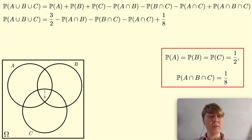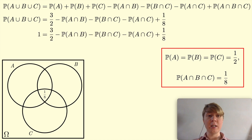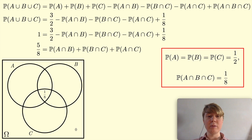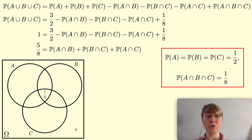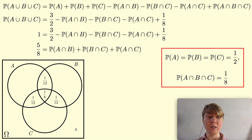I then tried setting the probability of A union B union C equal to one, filling in a zero for the region outside all three. Rearranging the inclusion-exclusion equation gives five-eighths equal to the sum of the three pairwise intersection probabilities. For a nice symmetrical solution, I set these three probabilities equal, giving five twenty-fourths each for the probability of A and B, B and C, and A and C. That's three twenty-fourths in the centre plus one-twelfth in each pairwise-only region, and everything satisfies inclusion-exclusion.